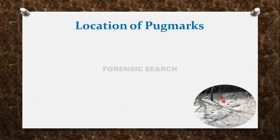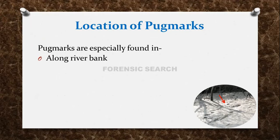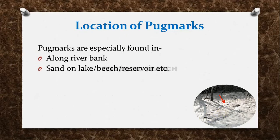Now, what is the location of Pugmarks? Pugmarks are especially found along river banks. Wherever there is a river, along its bank we can find Pugmarks. The next location is sand on lake, beach, or reservoir — because animals come there to drink water, so on the sand of those areas, there are chances of finding Pugmarks.